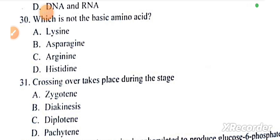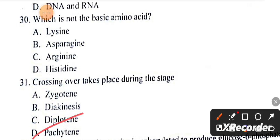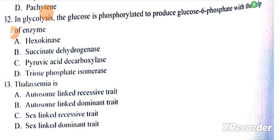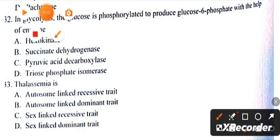Question number 32: In glycolysis, glucose produces glucose-6-phosphate with the help of hexokinase.